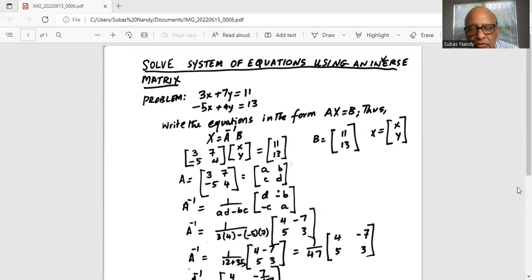Let's calculate the determinant. AD minus BC is 3 times 4 minus minus 5 times 7. Two minuses make the second term positive, so the determinant is 12 plus 35, which equals 47.